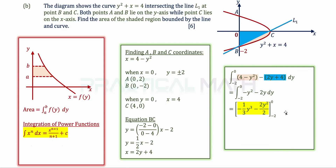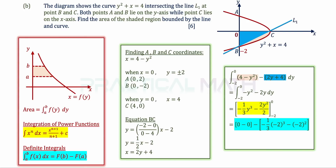Substituting y = 0 and y = -2 into the integrated expression and calculating gives 4/3 square units. That is the answer for part B. Thank you for watching and see you in the next one.